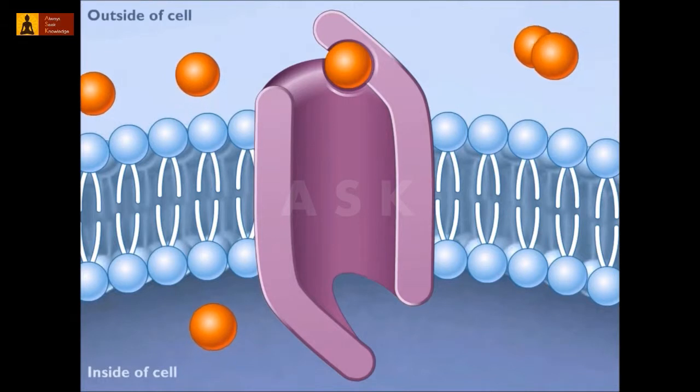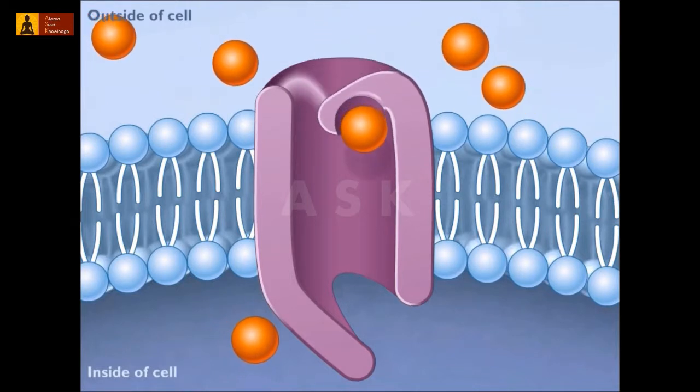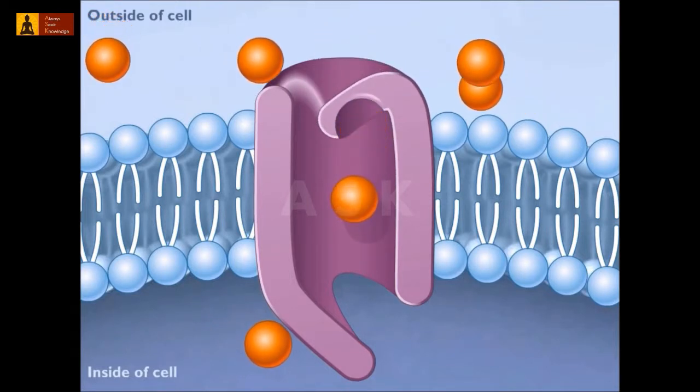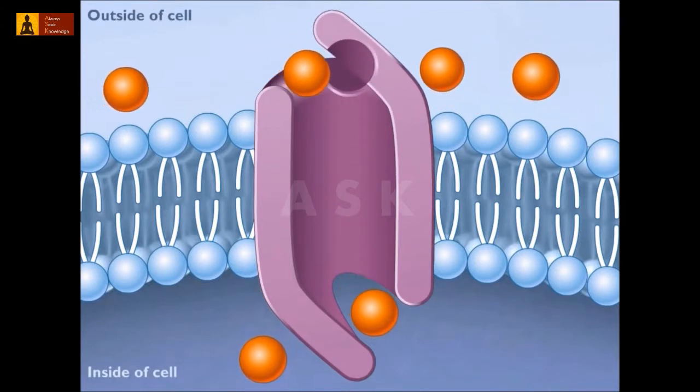Once the molecule binds to the carrier protein, this protein helps or facilitates the diffusion process by changing shape and moving the molecule down its concentration gradient through the membrane into the cell where it is released.